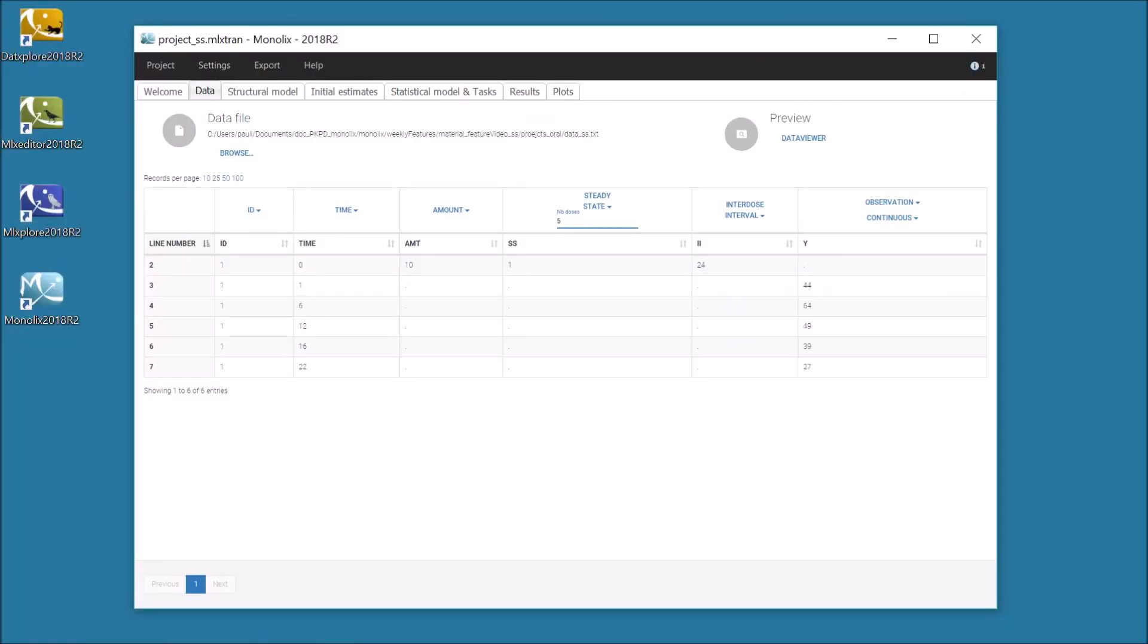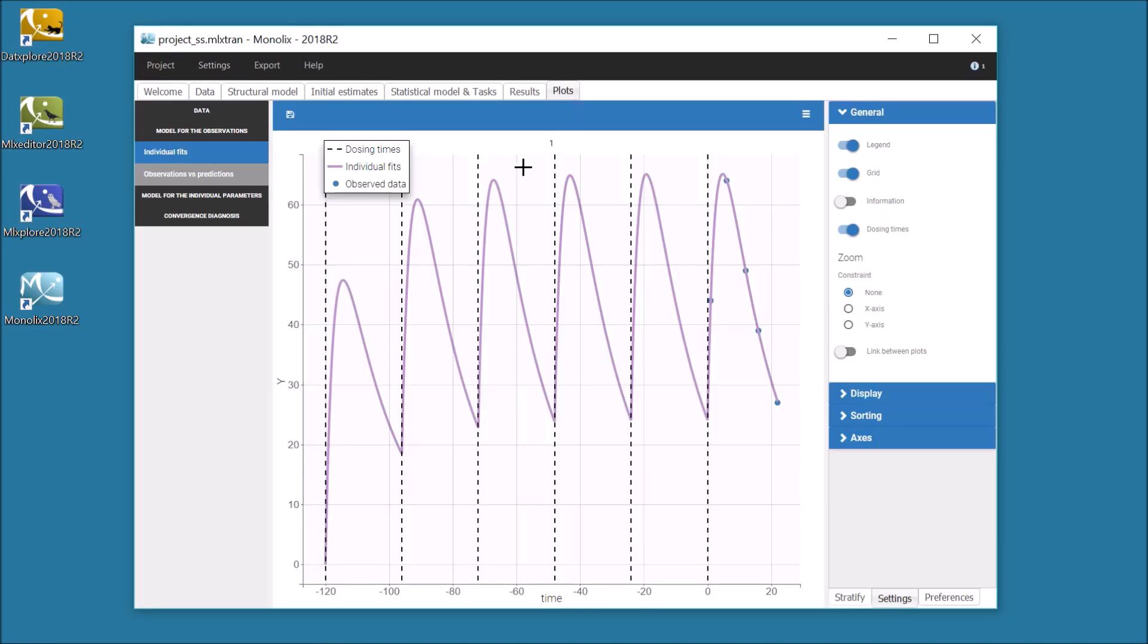So remember that the number of doses to add can be changed here and will be saved in the project file. Then it is up to me to check, for example on the individual fit, that the number of doses is sufficient to reach the steady state for this individual.